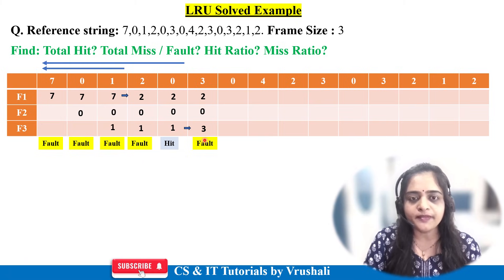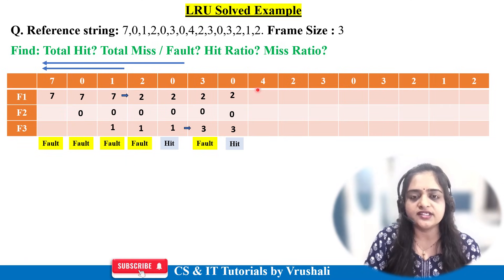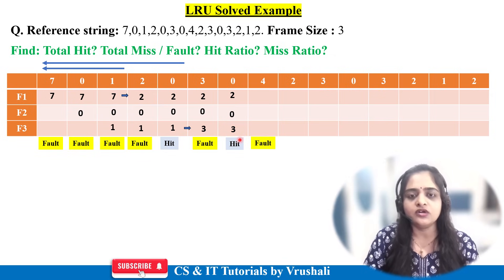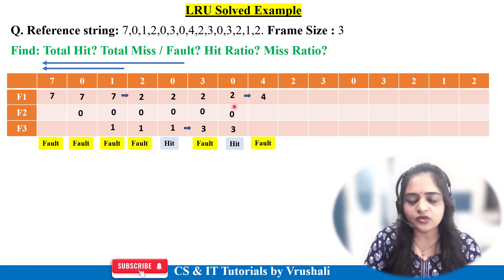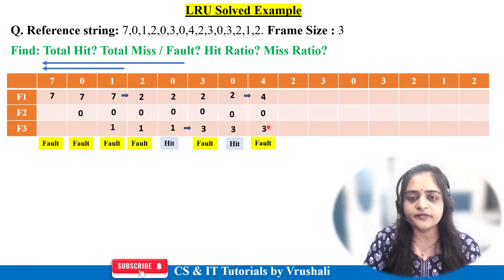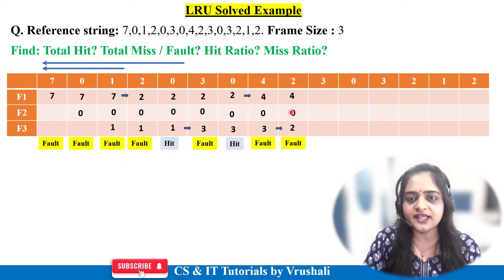Next is page 0 — already present in main memory, so a page hit. Write down 2, 0, 3 as is. Next is page 4 — not present, page fault. Compare the previous pages: 0, 3, and 2. The least recently used is 2, so replace page 2 with page 4. Next is page 2 — not present, page fault. Compare 4, 0, and 3. The least recently used is 3, so replace page 3 with page 2, and keep the remaining data as is.